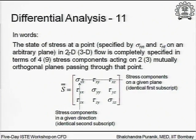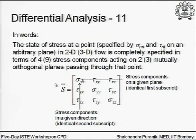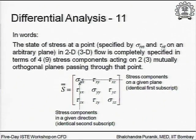In 2D we need four stress components acting on two mutually orthogonal planes through that point to specify the state of stress completely. In 3D, nine stress components on three mutually perpendicular planes through the point. These nine components are usually represented using the stress tensor in matrix form.